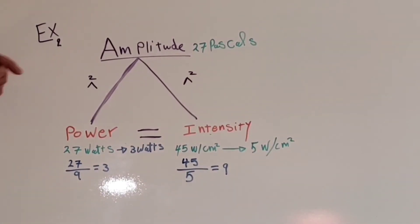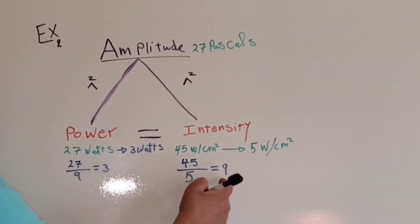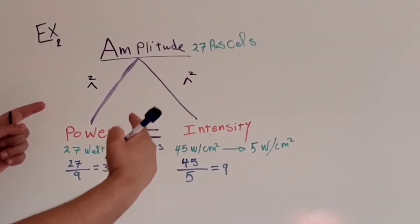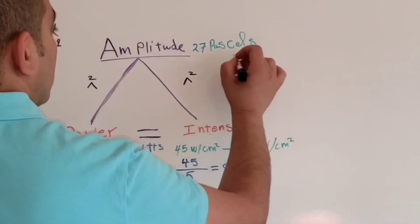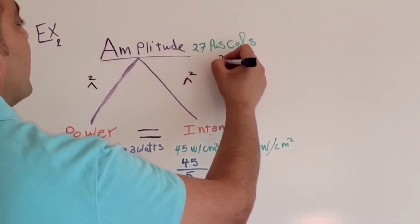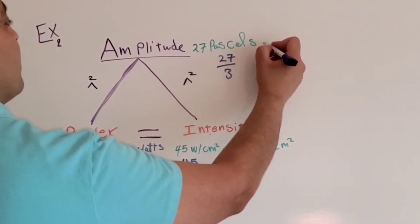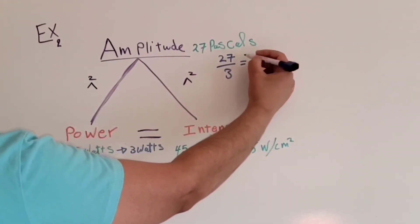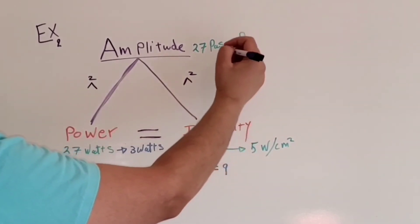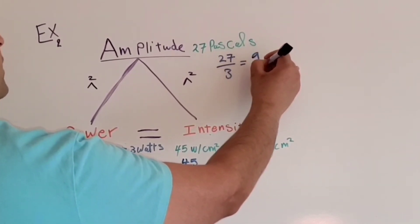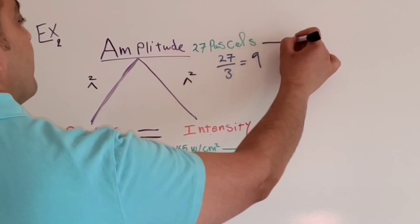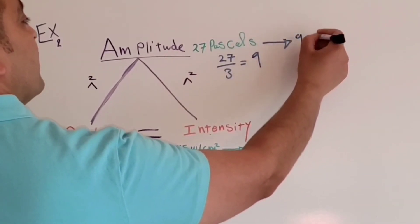What about the amplitude? Because the power and intensity decreased by a factor of 9, and since power and intensity are proportionally related to the amplitude squared, the amplitude will decrease by a factor of 3 — because 3 squared is 9. To get the final value for the amplitude, divide 27 by 3. So the final value for the amplitude will be 9 Pascals.